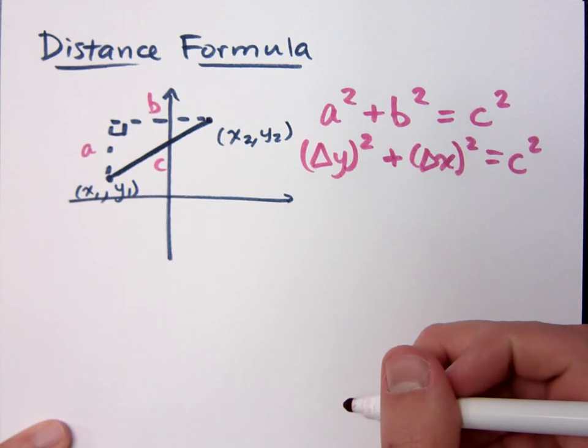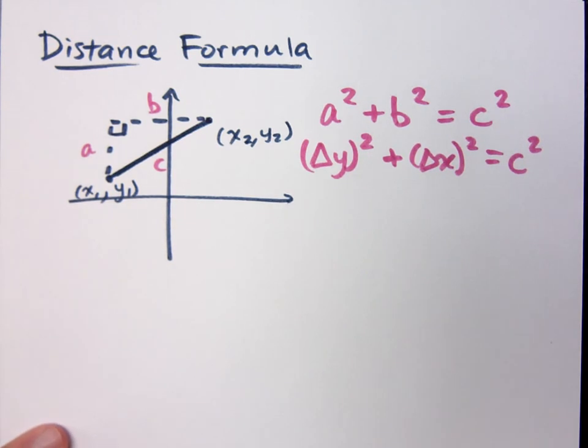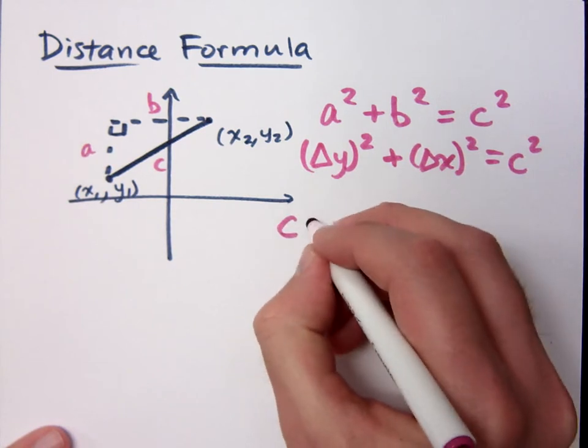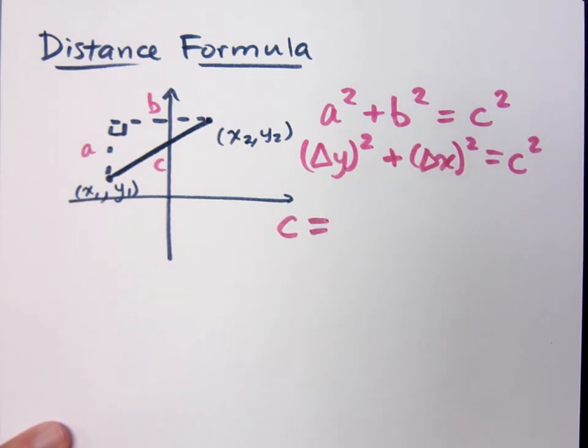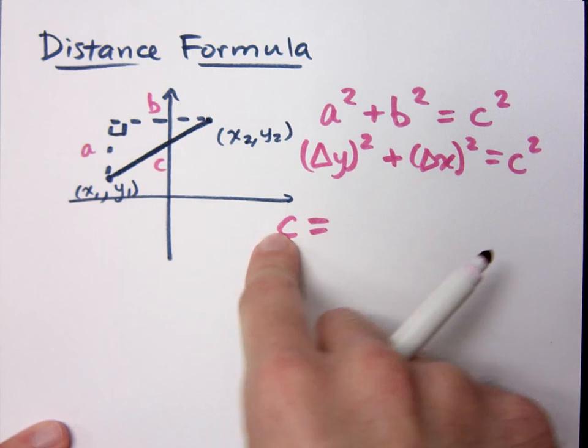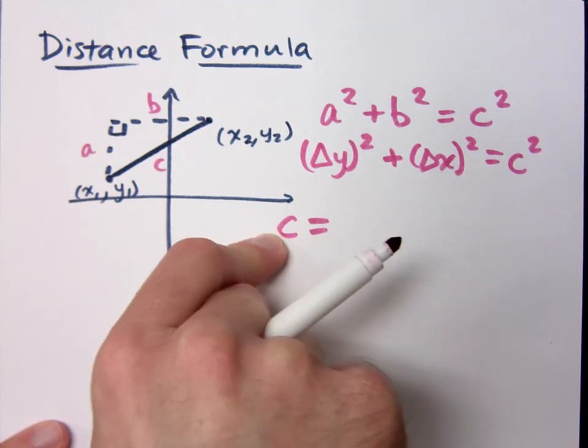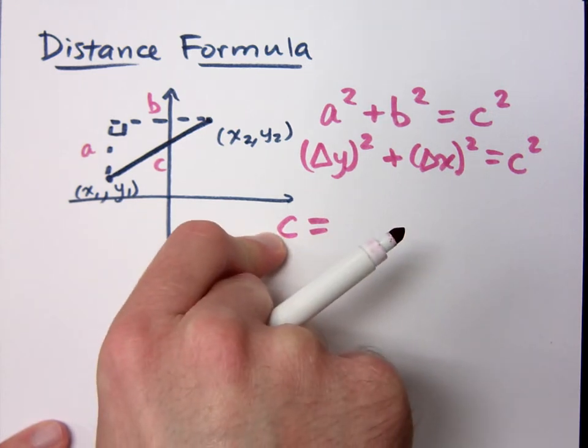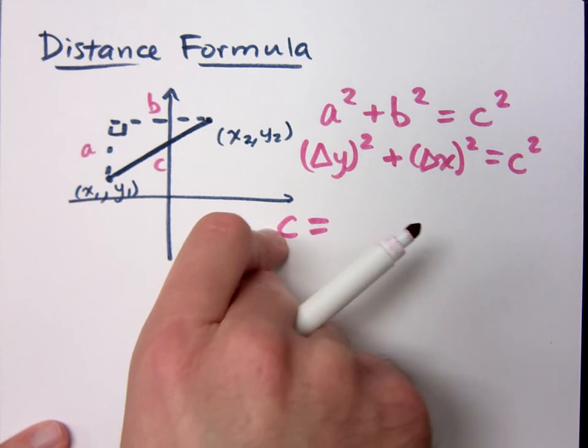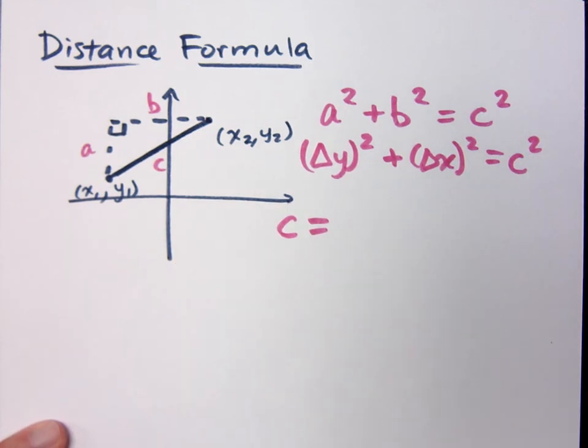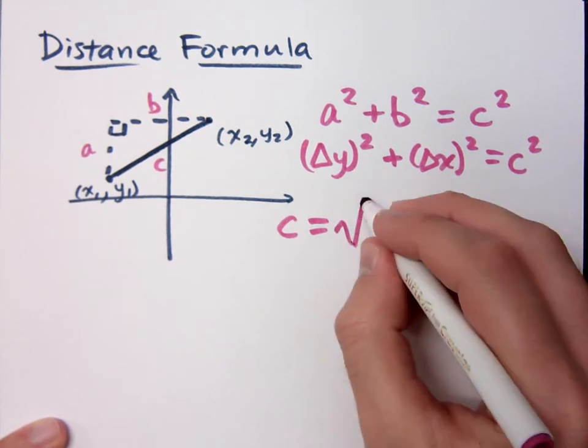Now if we rearrange things a little bit, I don't want c squared. I want just c, just my distance. So how do you go from c squared to just c? Use the square root property, right? Now if you use the square root property, that would be a plus or minus, right? But aren't we talking about distance? So we want it to be just what? Just the positive part. So it's the square root of what's inside the square root.